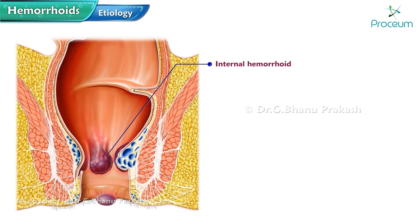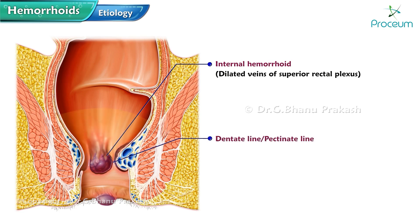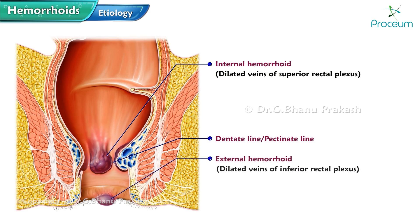There are two types of hemorrhoids: internal hemorrhoids, which are dilated veins of the superior rectal plexus located above the dentate line, and external hemorrhoids, which are dilated veins of the inferior rectal plexus located below the dentate line. The dentate line, also known as the pectinate line, is an anatomical demarcation in the anal canal.